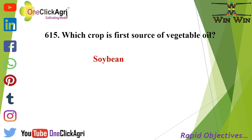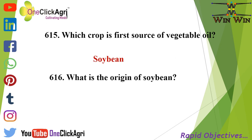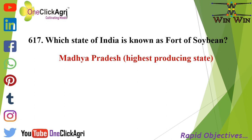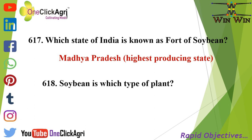The origin of soybean is from China. The state of India known as the fort of soybean is Madhya Pradesh, which is also the highest producing state. Soybean is a C3 short day plant.